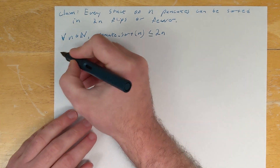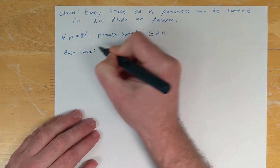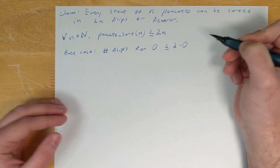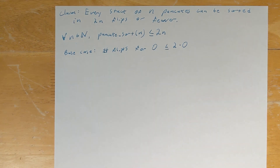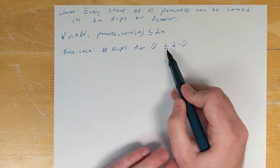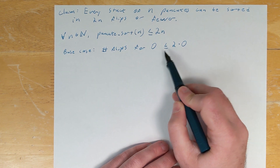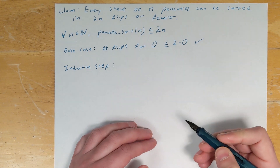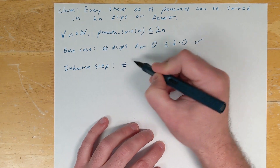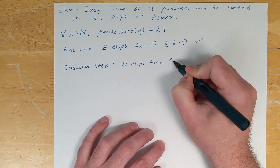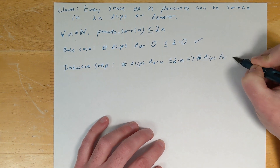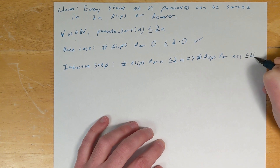To show our proof by induction, we first demonstrate the base case: the number of flips for zero pancakes is less than or equal to 2 times zero. If we have zero pancakes, our stack is already sorted — zero flips required — which satisfies our base case. Next we show the inductive step: we assume the number of flips for a stack of size n is less than or equal to 2n, and show that implies the number of flips for n plus 1 is less than or equal to 2 times n plus 1.